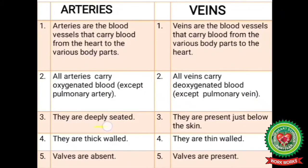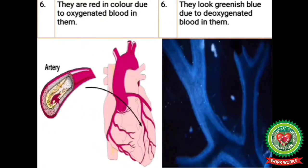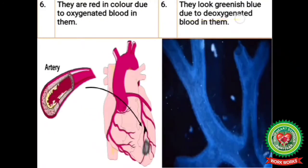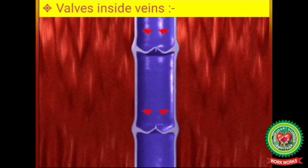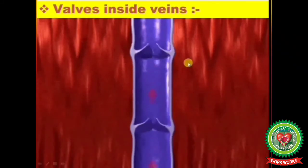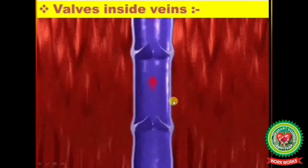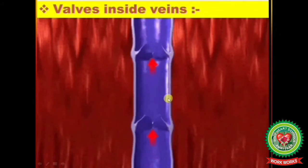Arteries are deeply seated, thick-walled, and red in color due to oxygenated blood. Veins are present just below the skin, are thin-walled, and look green and blue due to deoxygenated blood. Valves are absent in arteries but present in veins. Blood in the veins is at much lower pressure than in the arteries, and one-way valves inside the veins prevent blood from flowing backward. The force of the heartbeat keeps blood flowing away from the heart through the arteries, so there is no need for valves inside them.